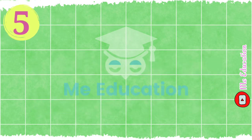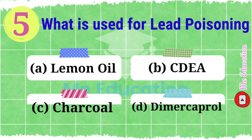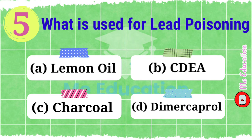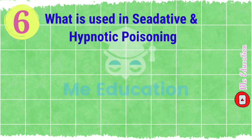Question number five: what is used for lead poisoning? Options: A) lemon oil, B) EDTA, C) charcoal, D) dimercaprol. Pause the video and try to solve this question. The right answer is EDTA.